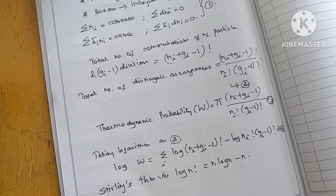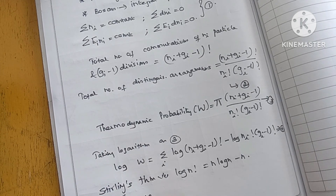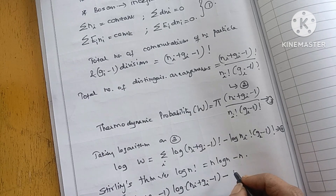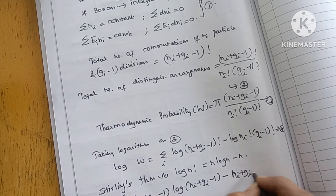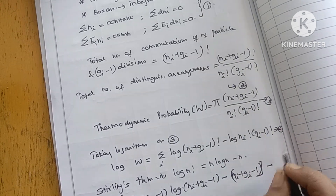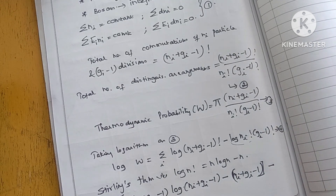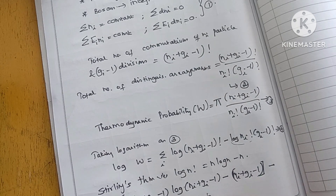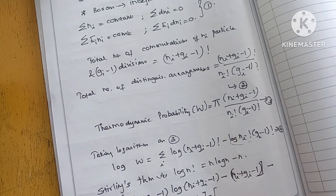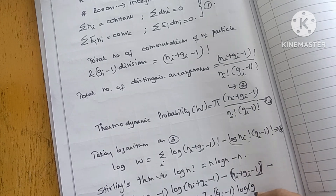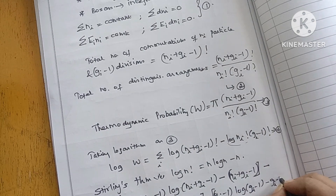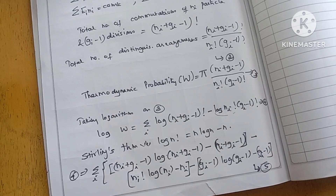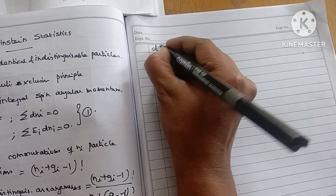So equation 4 can be written as summation i of (Ni + Gi - 1) log(Ni + Gi - 1) minus (Ni + Gi - 1), minus Ni log Ni plus Ni, minus (Gi - 1) log(Gi - 1) plus (Gi - 1). This is equation number 5.